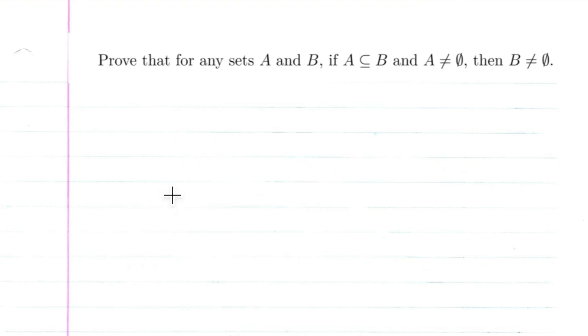Okay, so we're going to prove that for any sets A and B, if A is a subset of B and A is not equal to the empty set, then B is not equal to the empty set. Pretty straightforward. So let's go ahead and start the proof.